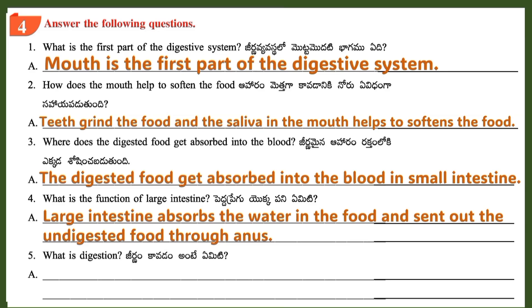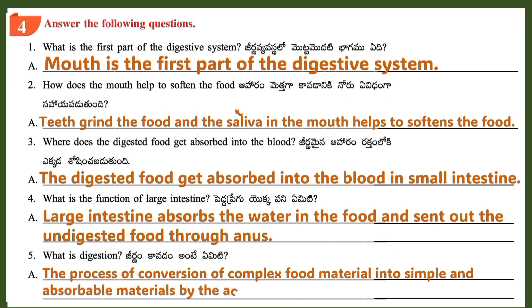Question 5: What is digestion? Answer: The process of conversion of complex food material into simple and absorbable materials by the action of enzymes is called digestion.